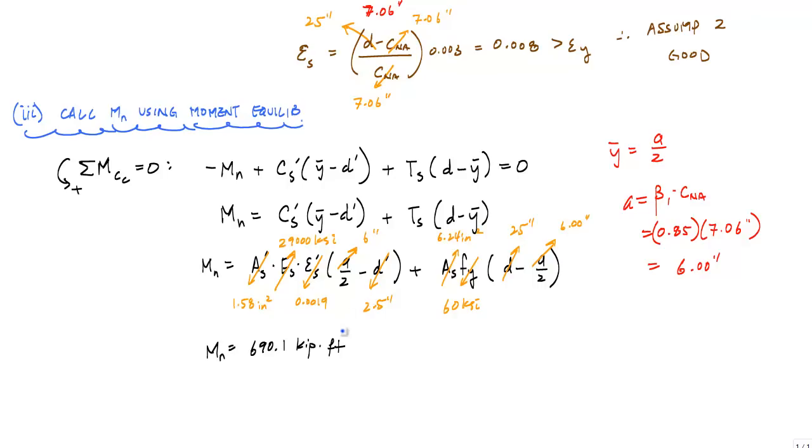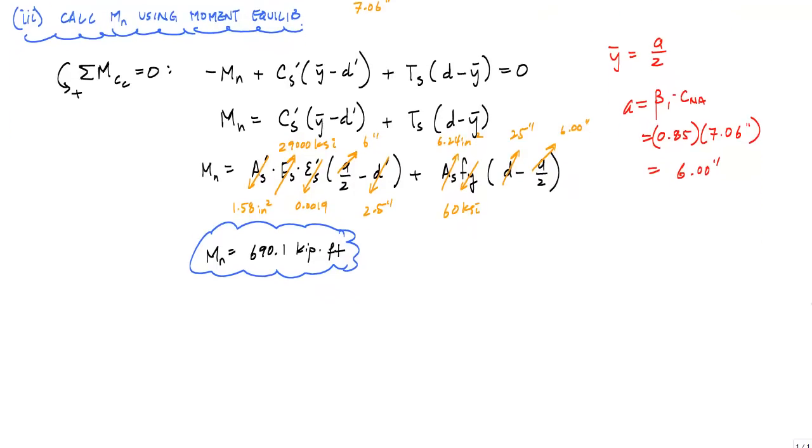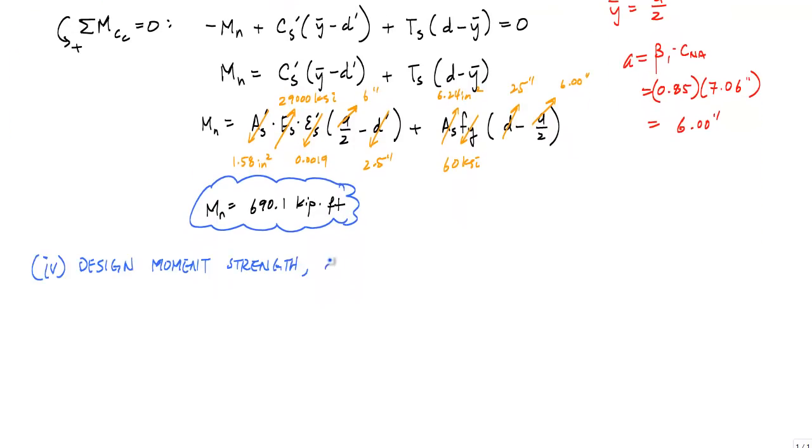So this is my nominal moment. Now we can determine our design moment strength, φMN. Phi is our strength reduction factor, which depends on the strain in the tensile reinforcement.